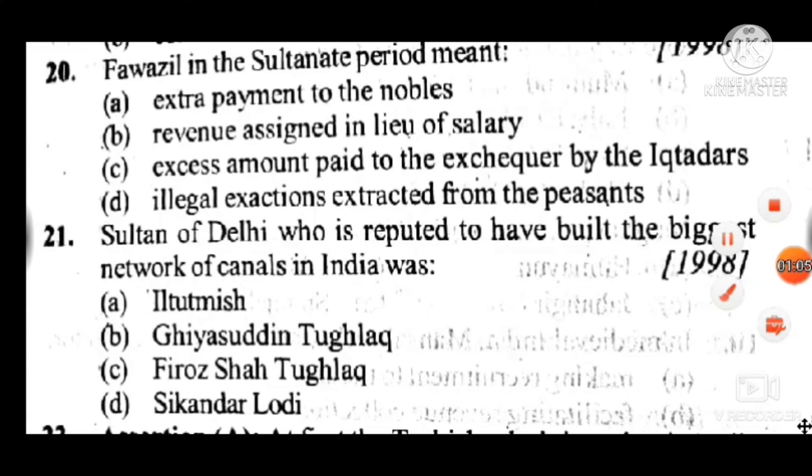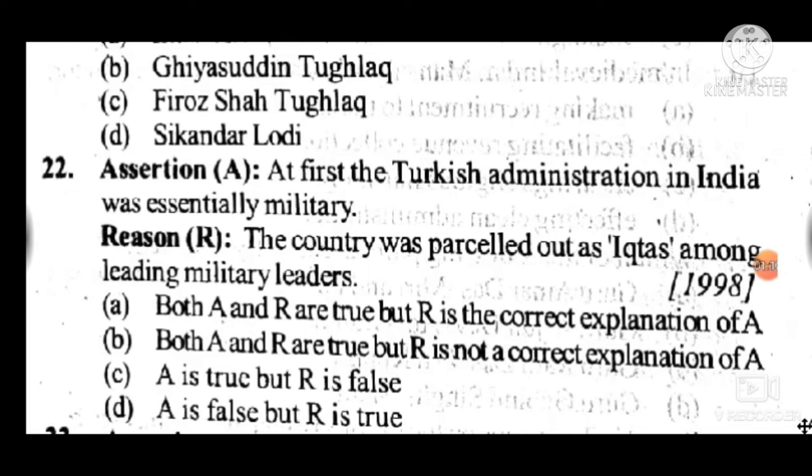Question 22: Assertion A — the Turkish administration in India was essentially military in nature; the country was parcelled out as iqtas among leading military commanders. Answer is A — both A and R are true, and R is the correct explanation of A.